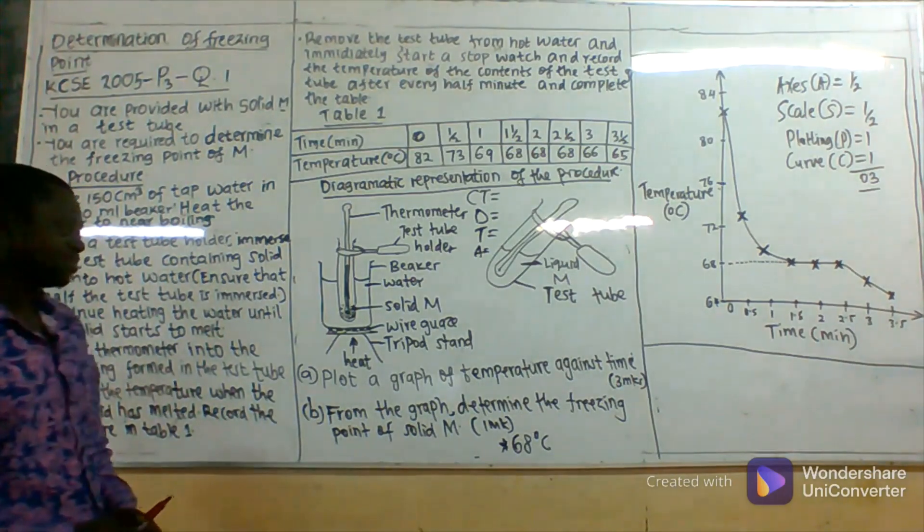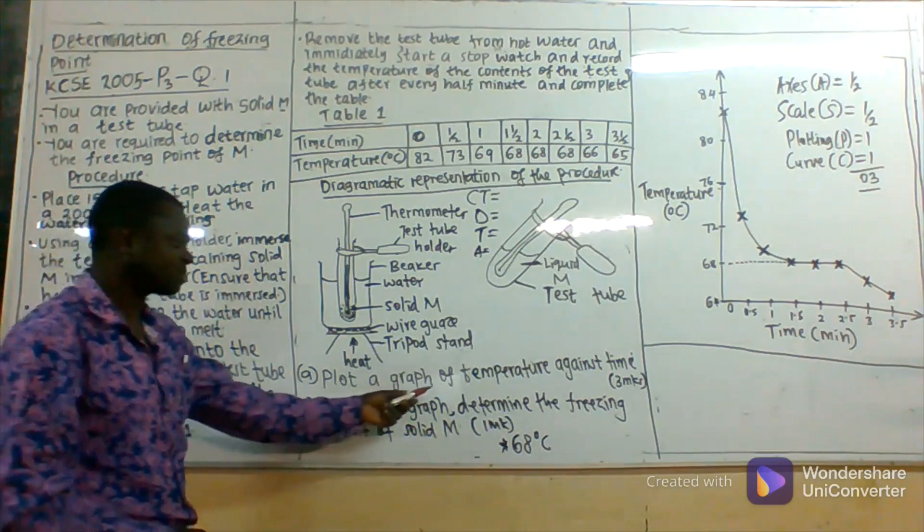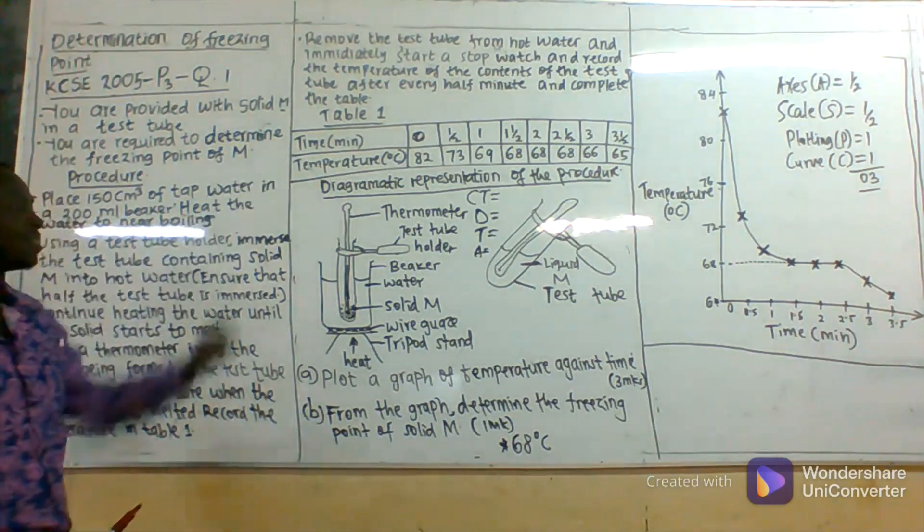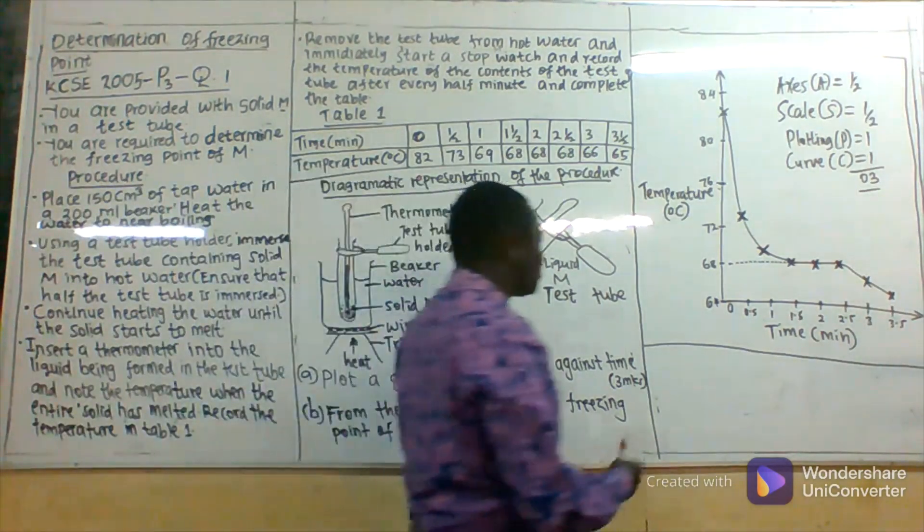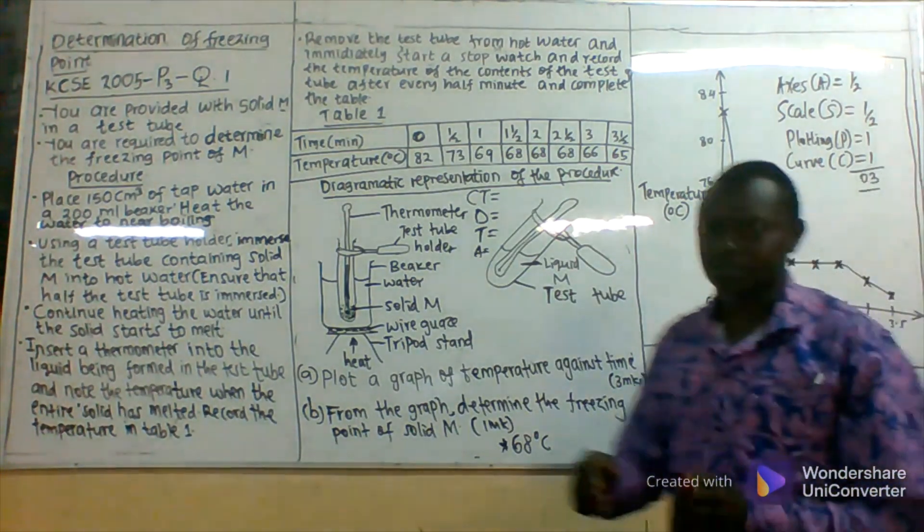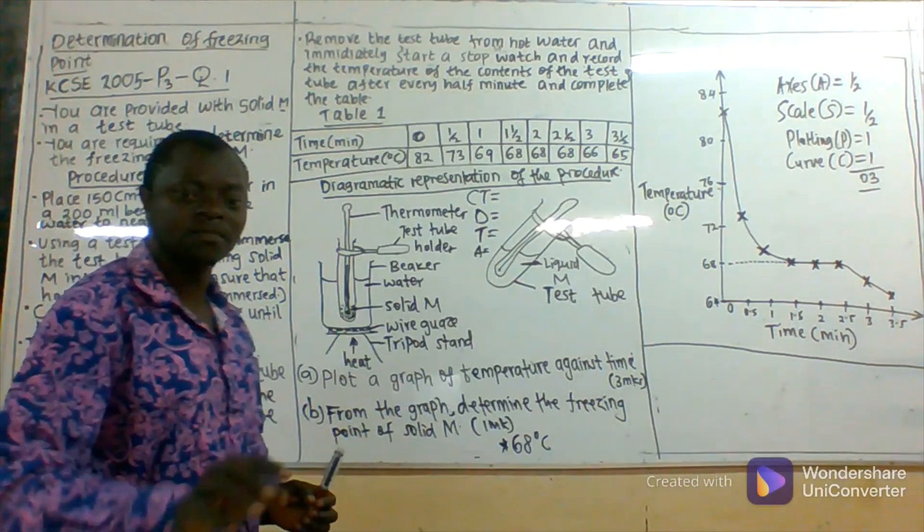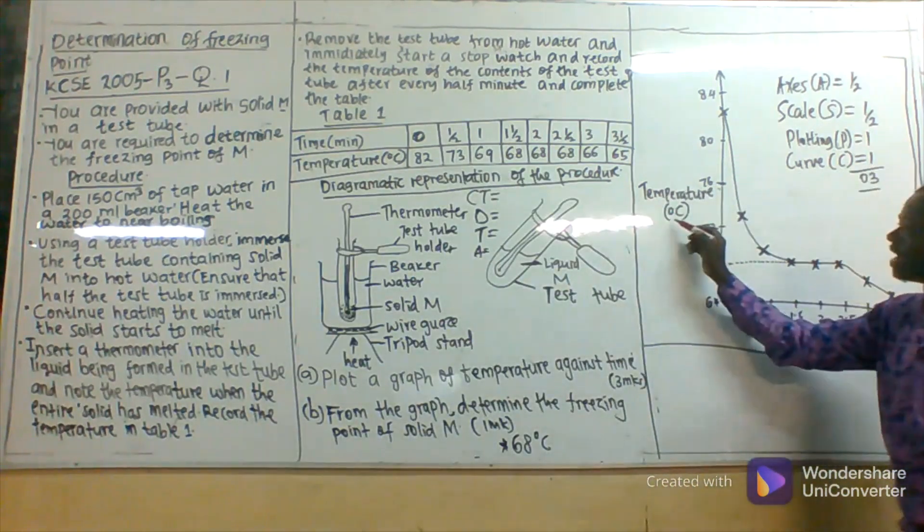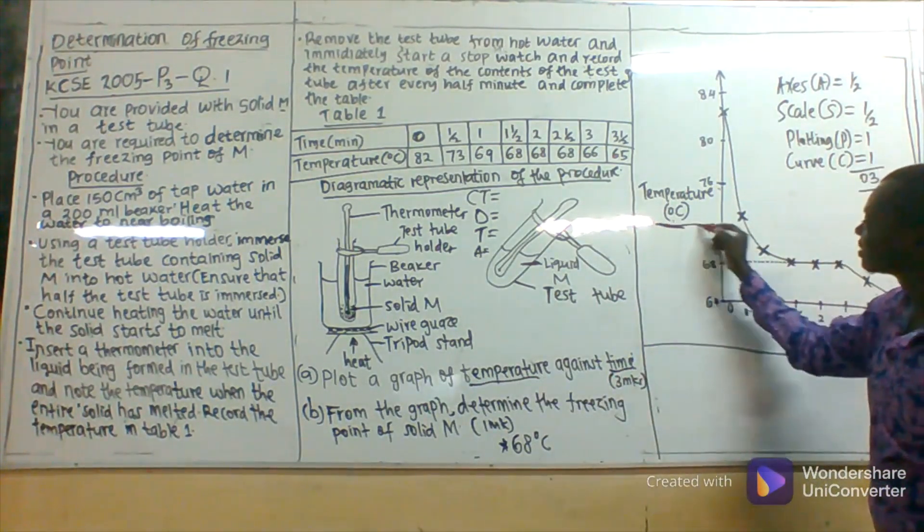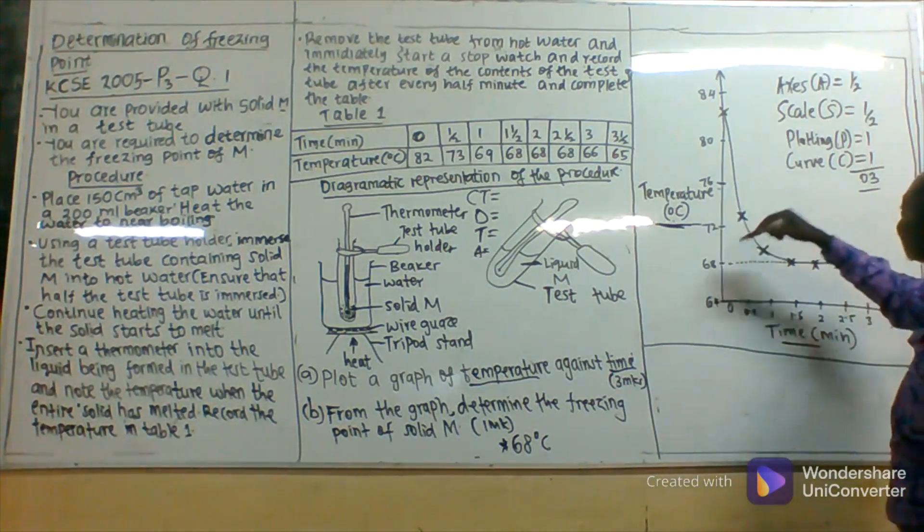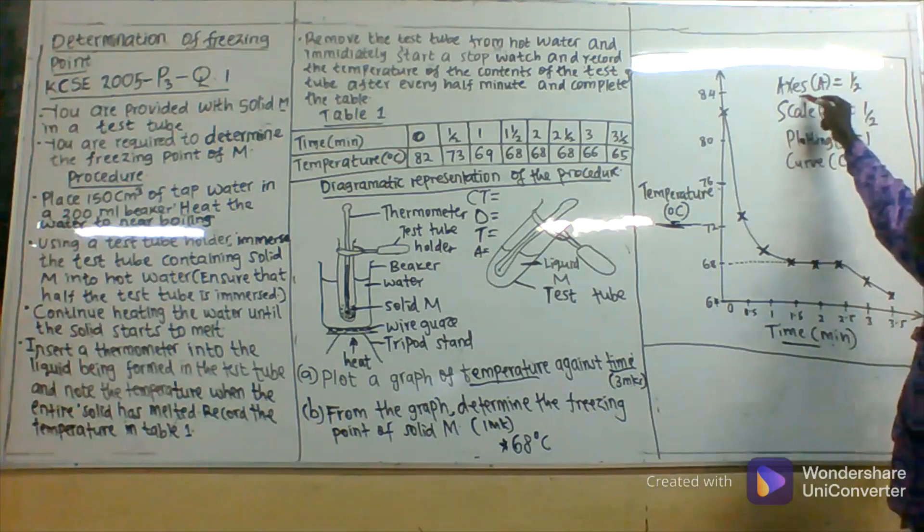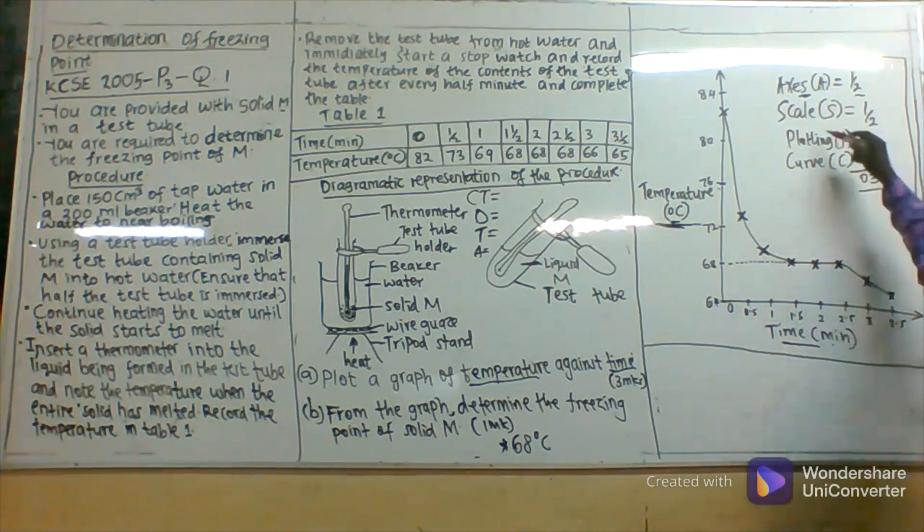In graph drawing, the first thing is to label the axis. The instruction was that you plot a graph of temperature against time. So label the axis. On the Y axis, we are supposed to have temperature in degrees Celsius, against time in minutes. You get half a mark for labeling of the axis. For the scale, there is another half a mark. For you to get that half mark for the scale, your plotted points must occupy at least three-quarters of your Y axis and of your X axis.